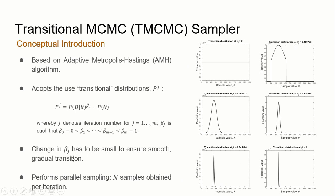One advantage TMCMC has over the Metropolis-Hastings sampler is that TMCMC is able to perform parallel sampling. If you want to generate n samples, all n samples can be generated simultaneously within one iteration, compared to the serial computation of Metropolis-Hastings, in which only one sample is generated per iteration.